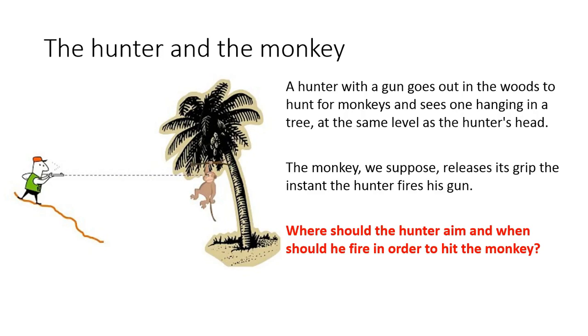Okay, so a hunter with a gun goes out in the woods to hunt for monkeys and sees one hanging in a tree at the same level as the hunter's head. The monkey, we suppose, releases its grip the instant the hunter fires his gun. So question, where should the hunter aim and when should he fire in order to hit the monkey?